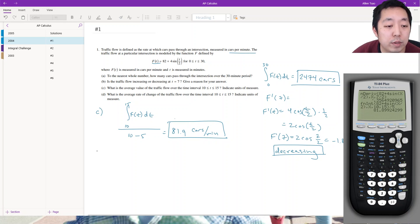What is the average rate of change of the traffic flow over the time interval? The average rate of change is always a slope. Because it's not instantaneous rate of change, it's an average rate of change, so I simply use a secant line slope: f(15) minus f(10) divided by 15 minus 10.